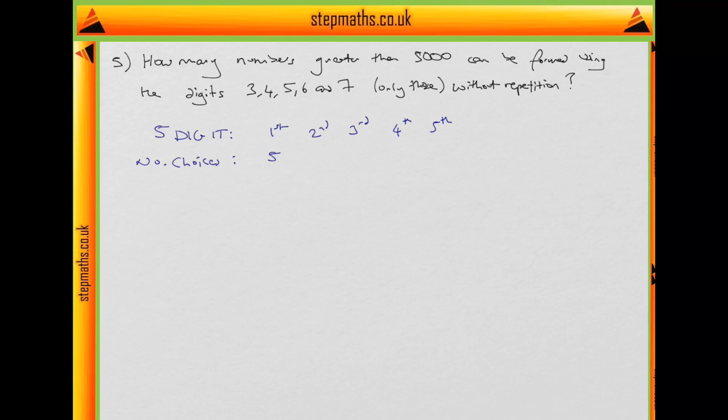Well we can't have any repetitions, so we only have 4 numbers left, so that gives us 4 choices. And similarly we can't have repetitions again, so it's 3 choices and then 2 choices and then 1 choice. Okay, so that gives us a total of 5 times 4 times 3 times 2 times 1.